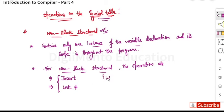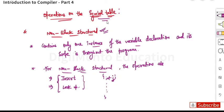For example, if we have 'int i' declared, there is only one instance of that variable and its scope is throughout the program. We can either insert the value or look up the value. These are the operations performed by non-block-structured languages on the symbol table.